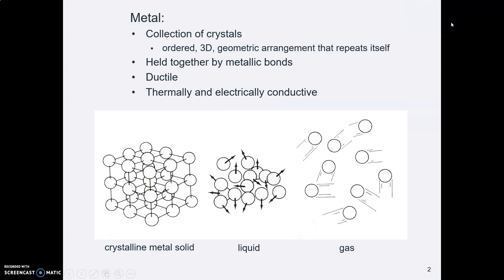First of all, what is a metal? Well, it's held together by atomic bonds that are metallic. There are three basic kinds of atomic bonds: ionic, which you find in something like table salt, covalent, and metallic.